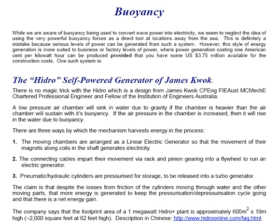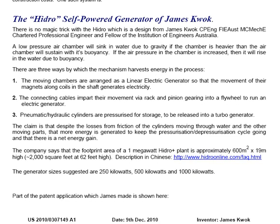The claim is that despite the losses from friction of the cylinders moving through water and the other moving parts, that more energy is generated to keep the pressurization stroke depressurization cycle going, and there is a net energy gain. The company says that the footprint area of a 1-megawatt hydro-plus plant is approximately 600 square meters by 19 meters high.